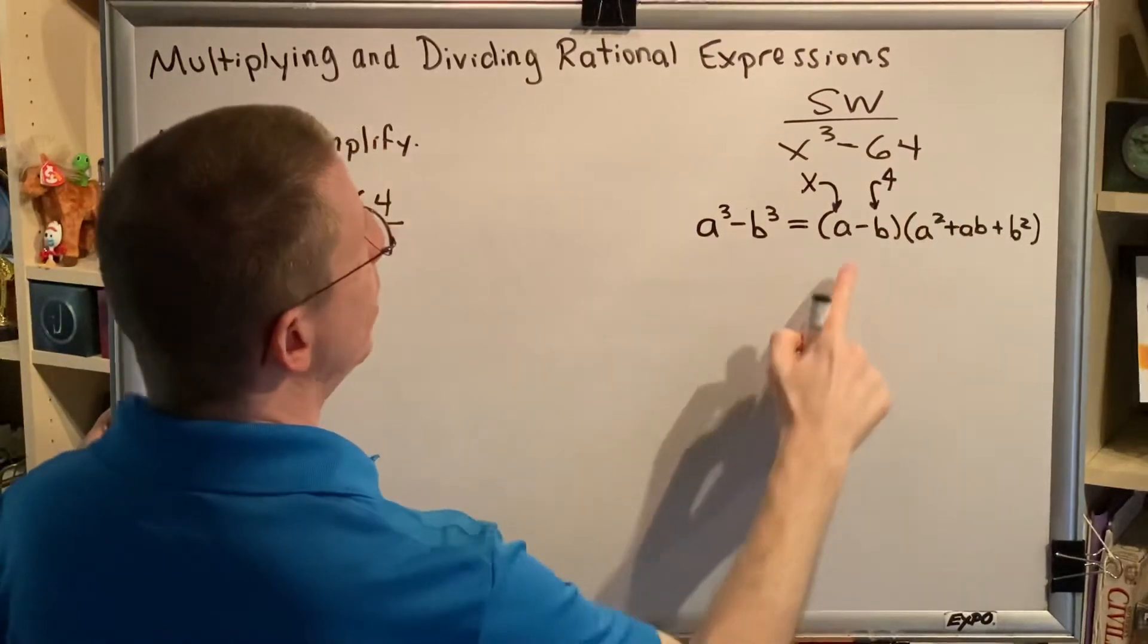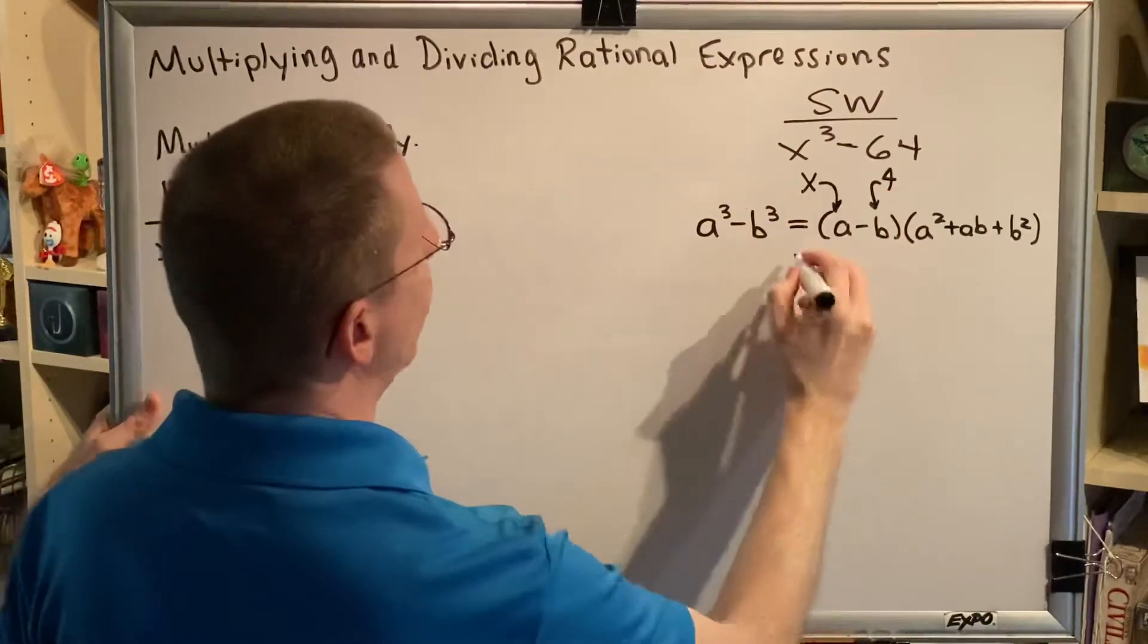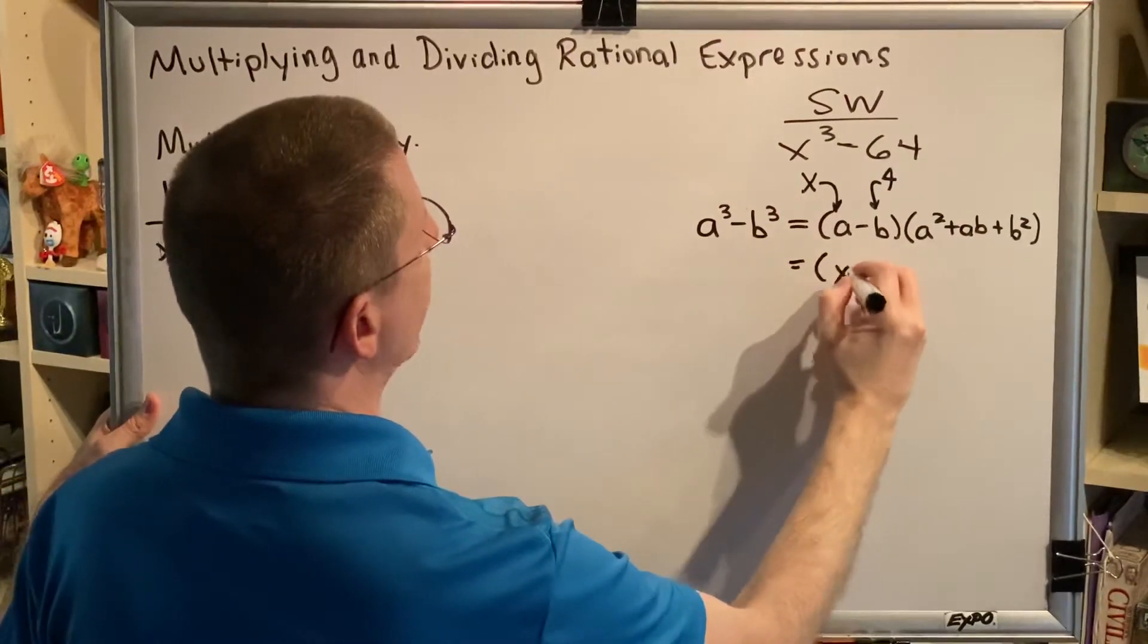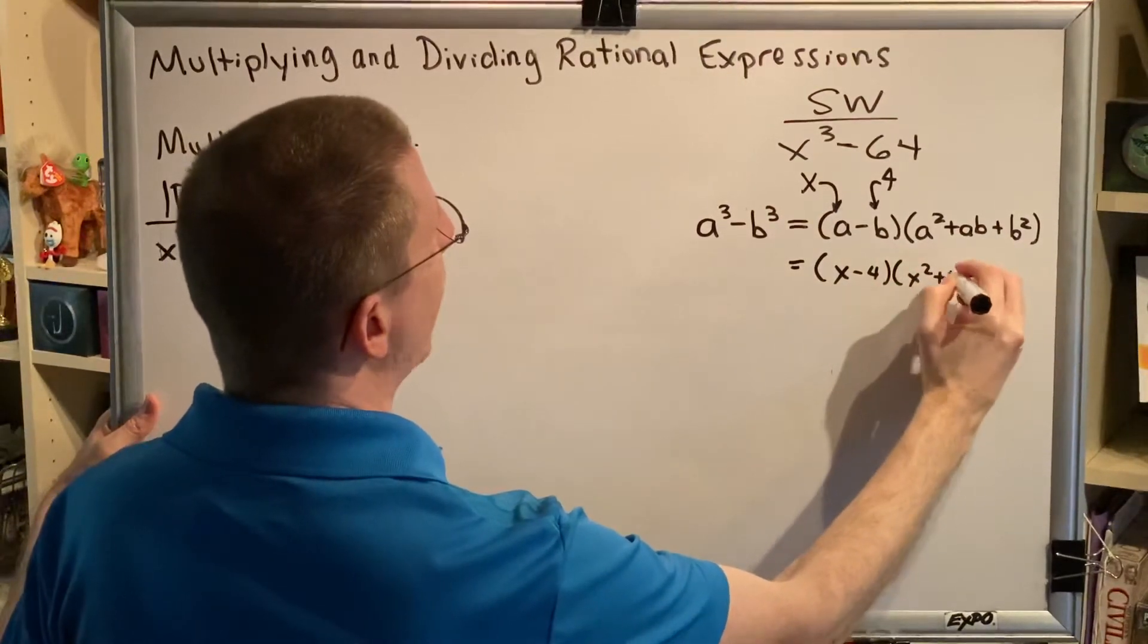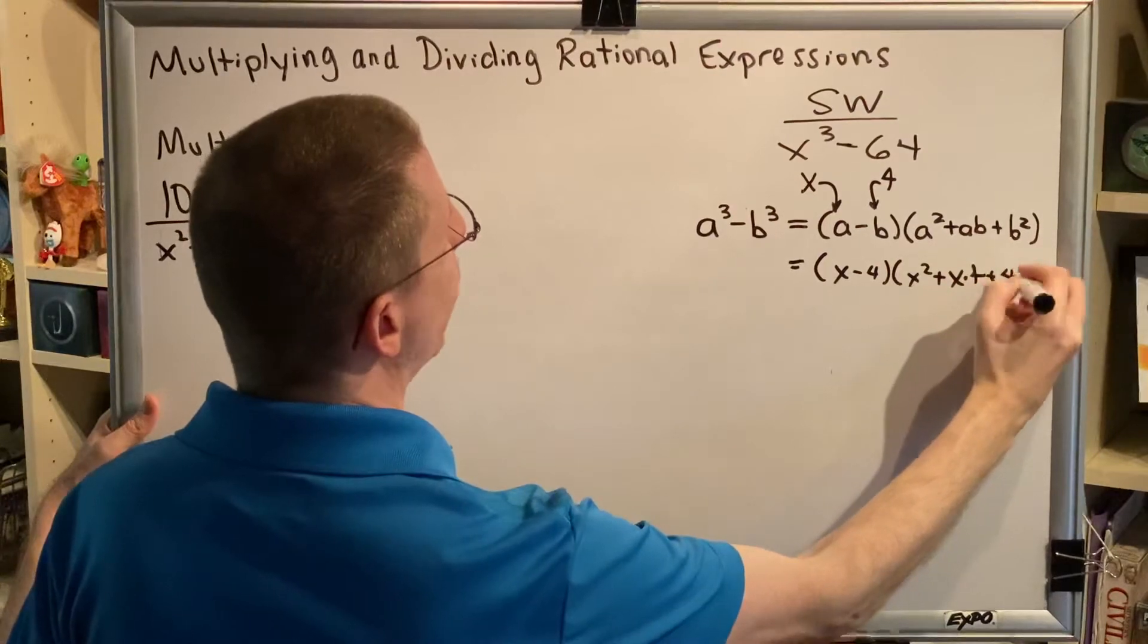So everywhere we see an a, we put x. And everywhere we see a b, we put 4. So we get x-4, x², plus x times 4, plus 4².